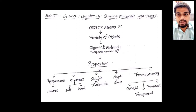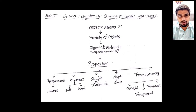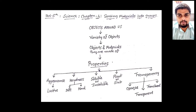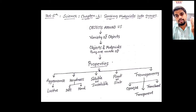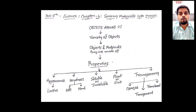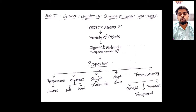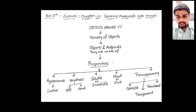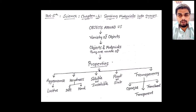The next property is soluble and insoluble — we will learn about that in detail in coming videos, so don't worry. After that we have float and sink — some materials or objects float in water and some sink. Finally, we have transparency — how transparent a material or object is — in which we are going to study opaque objects, transparent objects, and translucent objects. These are the main topics of this chapter.